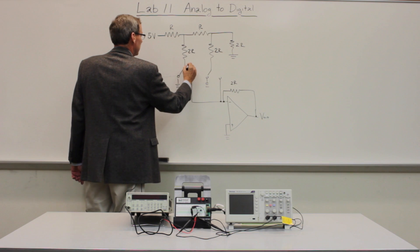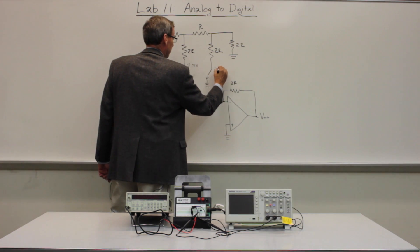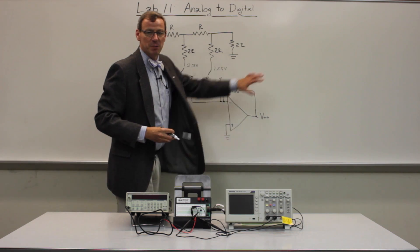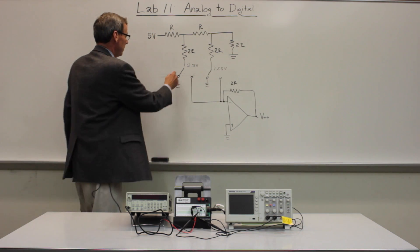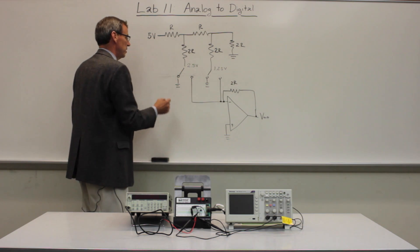5 volts coming in. We have 2.5 volts here. It's divided by 2. 1.25 volts here. If we added more stages, we'd keep getting divided by 2. And we've got switches here that we can either connect these to ground or connect them into the circuit.